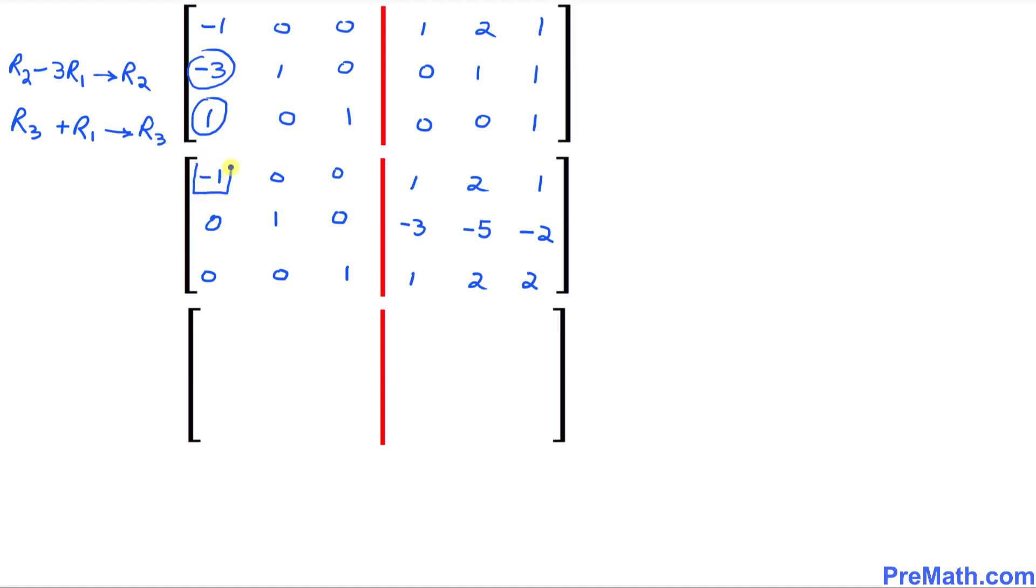Now we are almost finished. The only thing we can see is that this negative 1 we want to make it a positive 1 so we are going to multiply row 1 by negative 1.